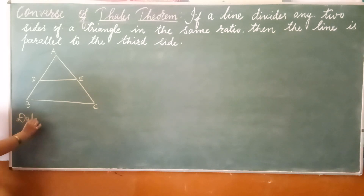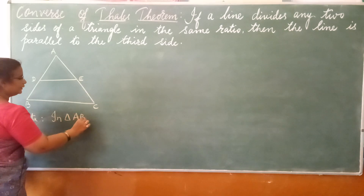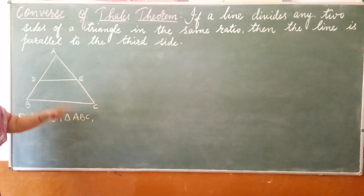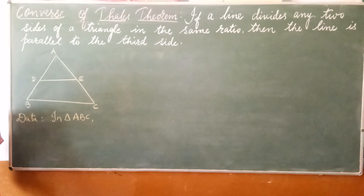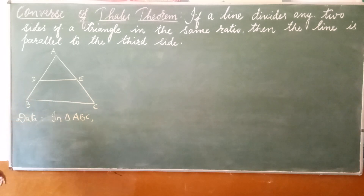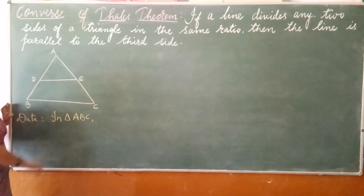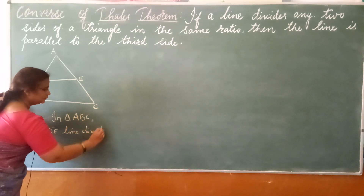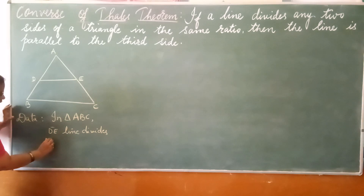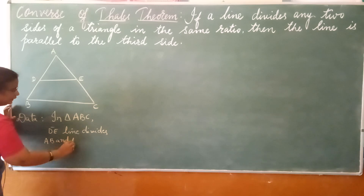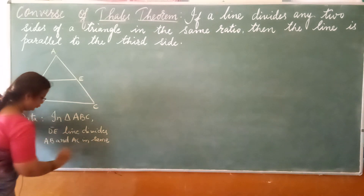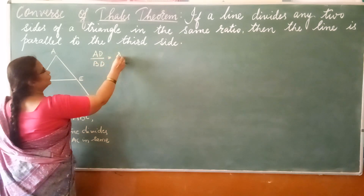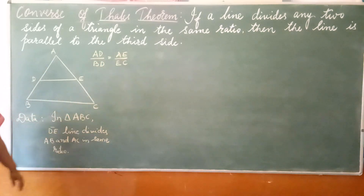What is given? In triangle ABC, DE is a line which divides AB and AC in the same ratio, meaning AD by DB is equal to AE by AC. This is given.